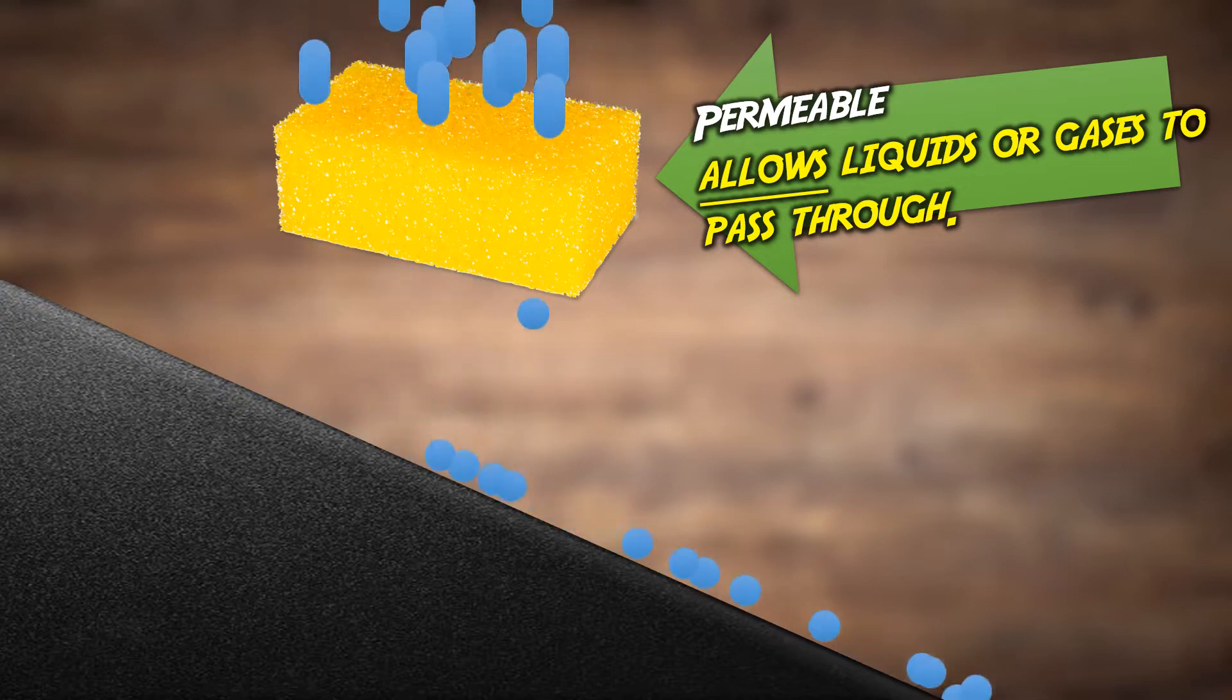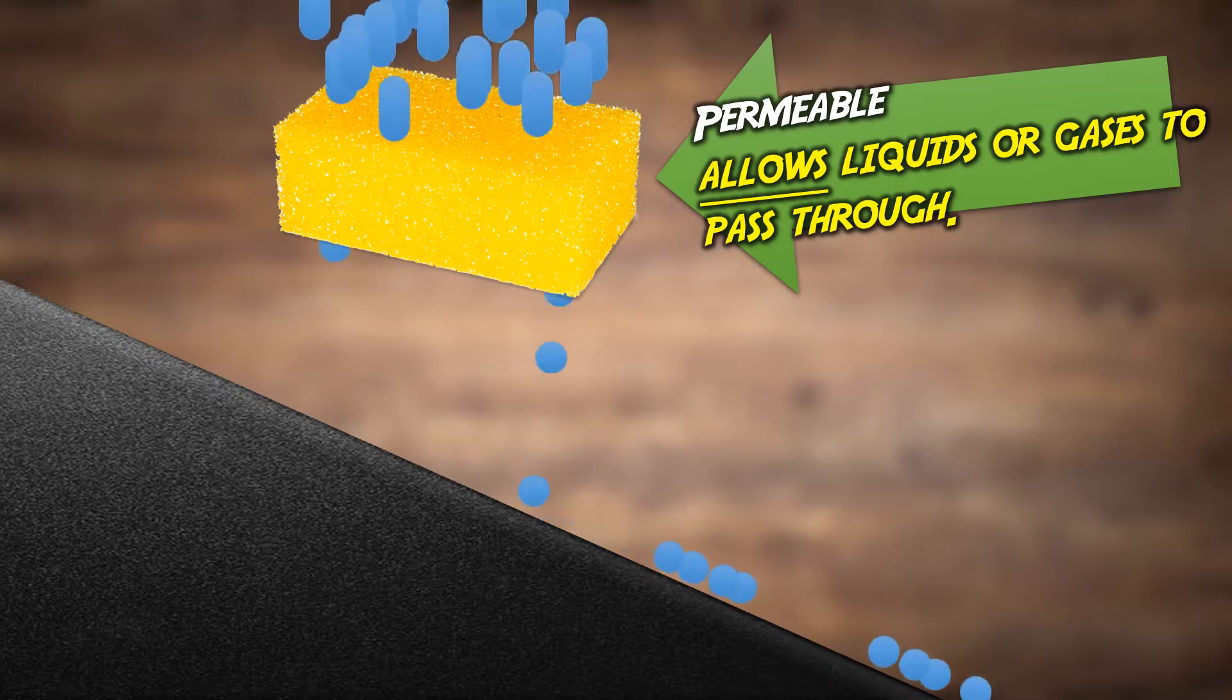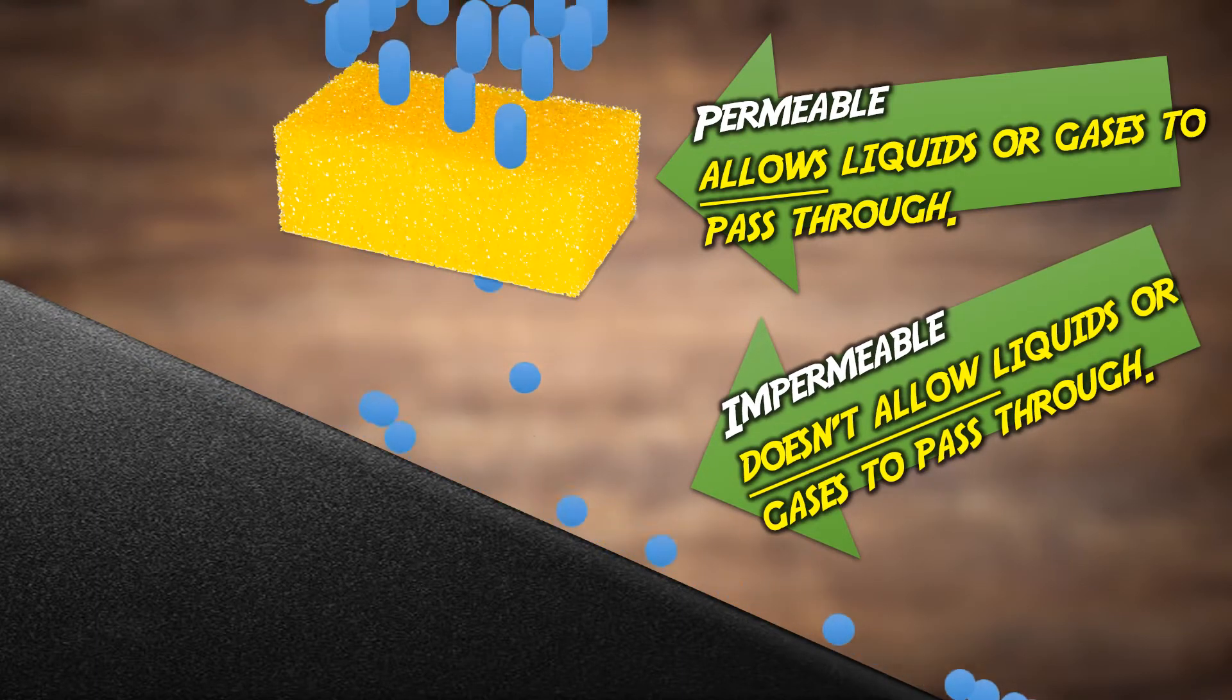Compare this characteristic with a plastic waterproof slope. Water just runs across it with zero absorption. This characteristic can be described as impermeable, as it doesn't allow liquids or gases to pass through.